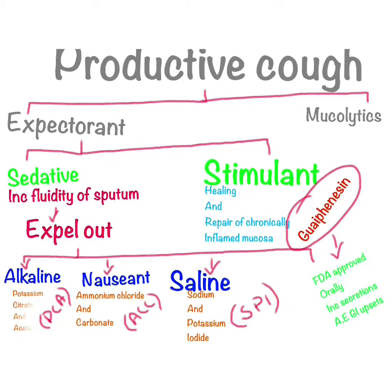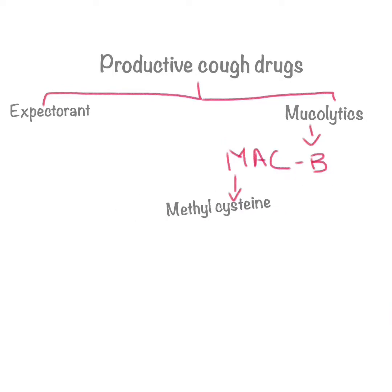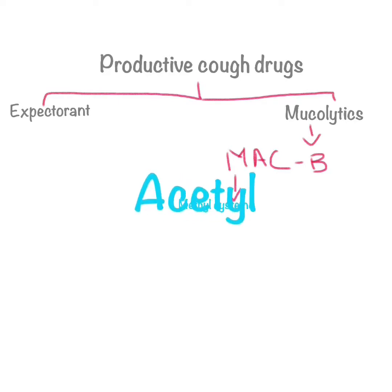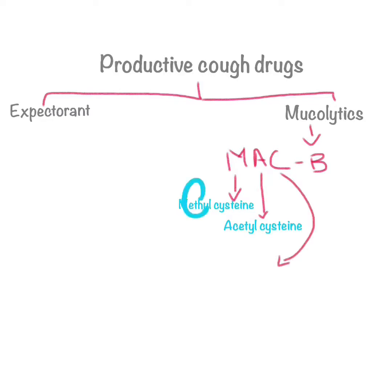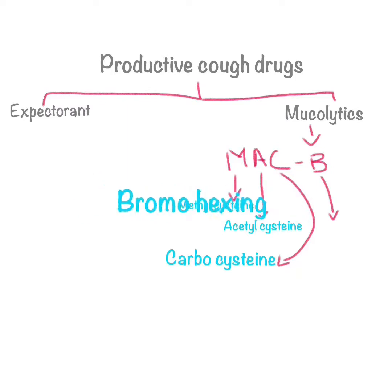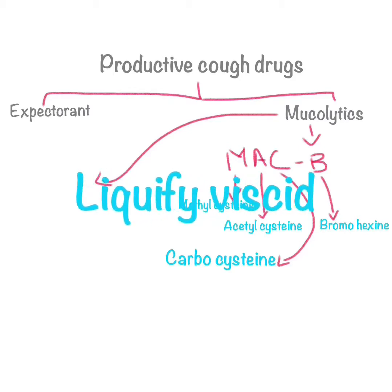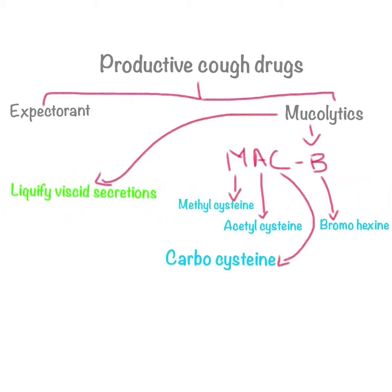The second classification of productive cough drugs is mucolytics. Mucolytics work through two main mechanisms, but the main function is reducing the viscosity of bronchial secretions and enhancing the effect of expectorants. They work through two mechanisms: the sulfhydryl group mechanism and depolymerization. We can remember the mucolytics from the mnemonic MAC-B: M for methylcysteine, A for acetylcysteine, C for carbocysteine, and B for bromhexine.